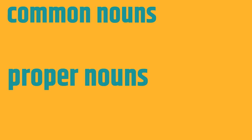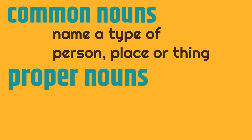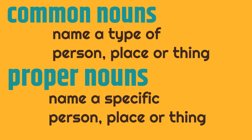First, common nouns. Common nouns name a type of person, place, or thing. So what about proper nouns? Proper nouns name a specific person, place, or thing. So a common noun names a type of person, place, or thing, and proper nouns name a specific person, place, or thing.